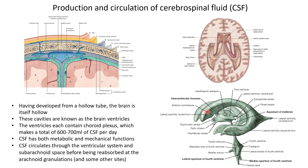Looking more closely at the lateral ventricles, we see they have different defined parts: the frontal horn sitting within the frontal lobe, the occipital horn sitting within the occipital lobe, and the temporal horn sitting within the temporal lobe. So each of the brain lobes has a part of the lateral ventricle filling it.